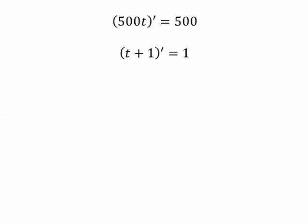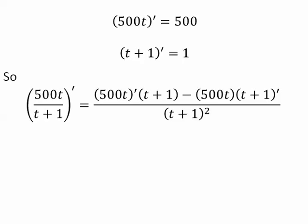The derivative of 500t is just 500. The derivative of t plus 1 is just 1. Knowing that, we can now simplify our expression. Instead of the derivative of 500t, we'll just have 500. And instead of the derivative of t plus 1, we'll just have 1.